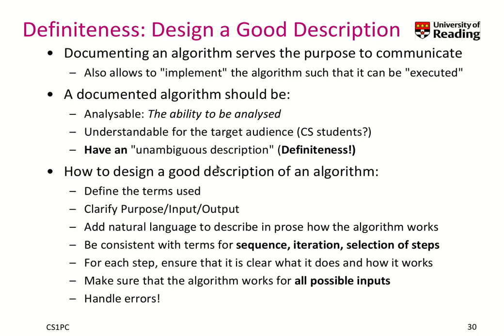Let's talk a little bit about definiteness, which basically means how to design a good description. Documenting an algorithm serves the purpose of communication — you want to enable someone else to implement the algorithm so it can be executed. A good description should be analyzable in a more formal sense, understandable for the target audience (for example, computer science students or chefs in a cookbook), and it should have an unambiguous description, which is our definiteness.